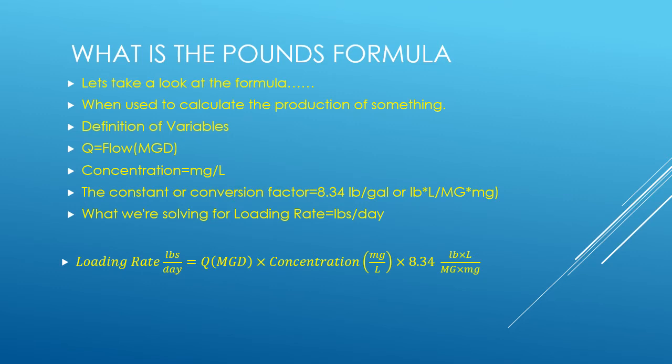Let's take a look at the formula. This is used to calculate the loading rate of a product in pounds per day. Let's look at the variables: Q, which is equal to flow in MGD; concentration, which equals milligrams per liter; and the constant, which is 8.34.